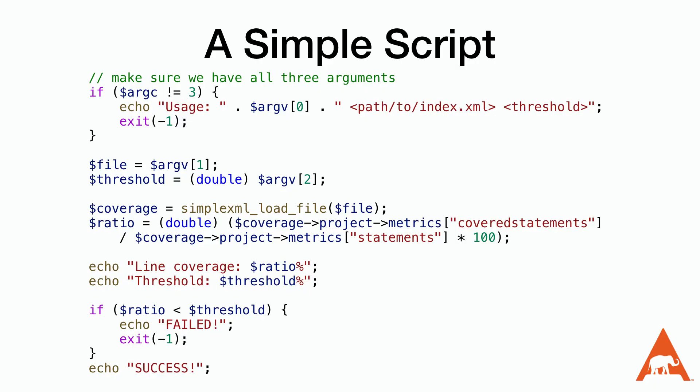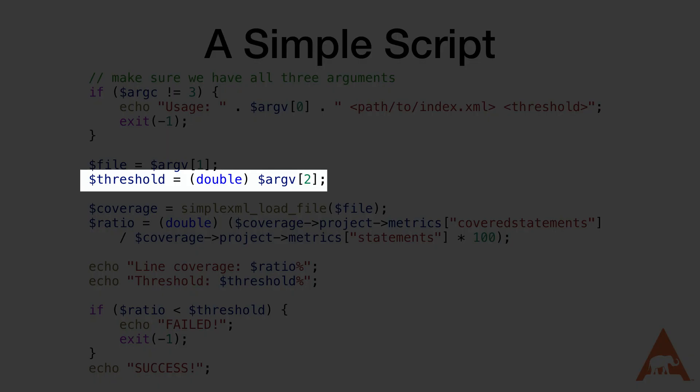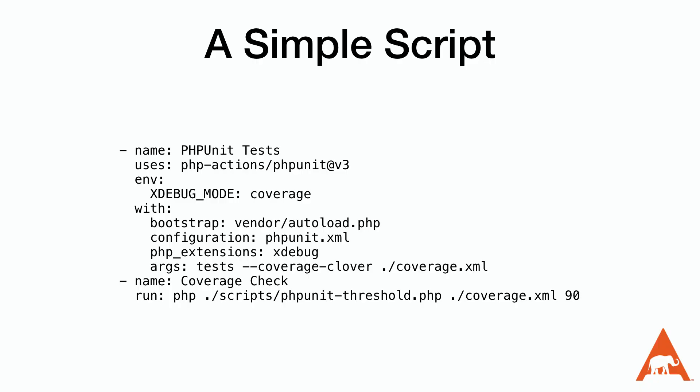Next, we need to create a script to read this value versus our required value. Because this is a PHP-focused channel, we'll use PHP for this, but you can use your preferred language. In order to make this script as flexible as possible, we're going to want to make the coverage percentage easily editable, so we've made it an argument to the script. That way, we can update it inside of our action.yaml file as needed. Now, we can integrate this into our GitHub Action for our value object project.